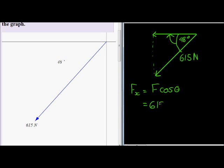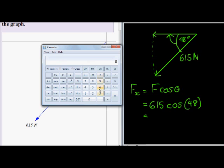Substituting into my formula is 615 cos of 48, and that gives me an answer of 615 times 48 cos is equal to 411.52.